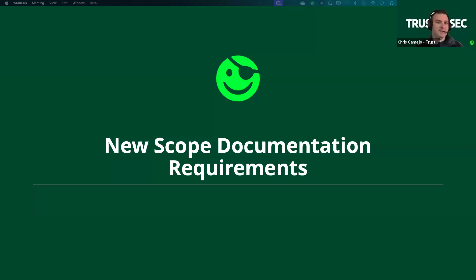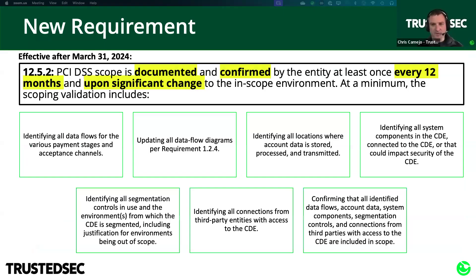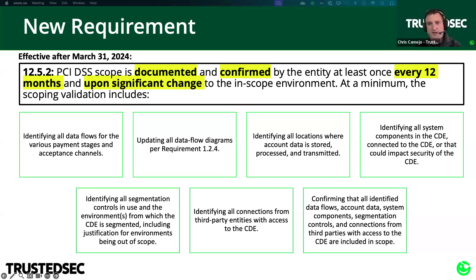Getting into that new scope documentation requirement: it is requirement 12.5.2. The motivation is that organizations have to document and confirm their scope is accurate every 12 months or after a significant change. There are seven bullet points in the boxes underneath this requirement that we'll get into in much more detail later. This requirement came into effect with version 4.0 on April 1st, 2024.